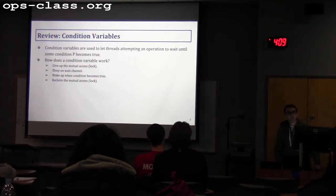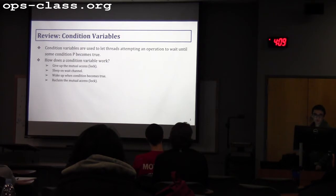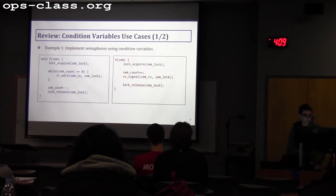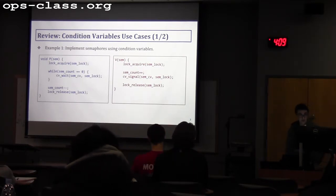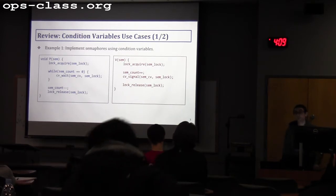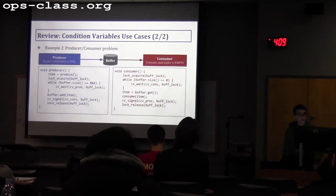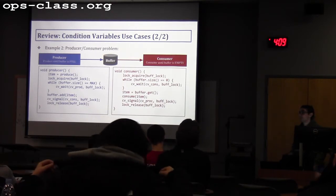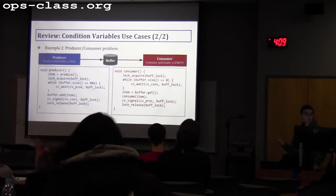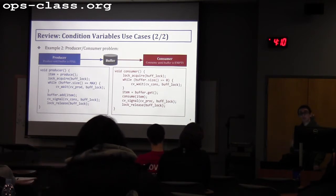We should all now know that condition variables basically allow threads that are waiting for some condition to become true to go to sleep and release the lock. And then, once that condition becomes true, they wake up and get the lock back. We've also presented two examples or use cases for condition variables. One is how to implement semaphores using condition variables, where the condition is the semaphore count. We've also presented the producer-consumer problem, where you use two condition variables, and each one — the producer and consumer — will signal the other one.